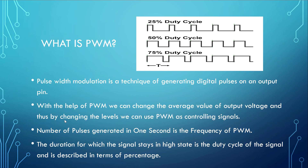So what is PWM? Basically, PWM is pulse width modulation and it's a technique of generating digital pulses on an output pin. PWM is essentially digital communication — it uses logic 1 and logic 0. With the help of PWM we can change the average value of the output voltage and also change the levels of controlling signals.